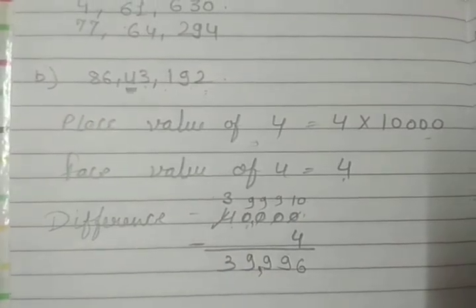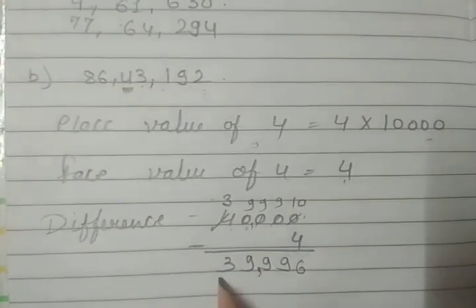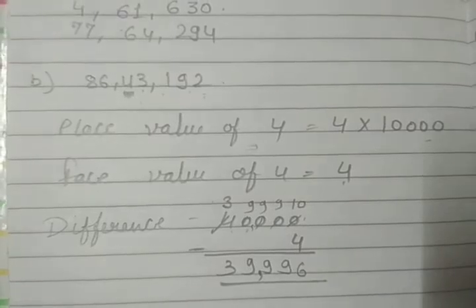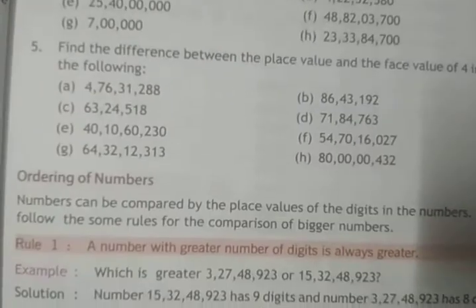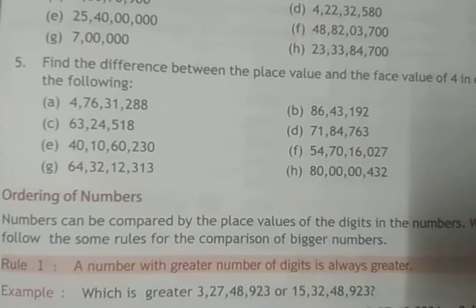10 minus 4 is 6, then 9, 9, 9, 3. So 39,996 is the answer. The other questions are your homework to complete in your rough copy.